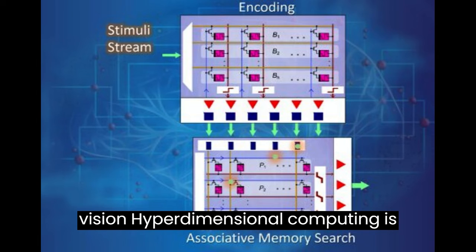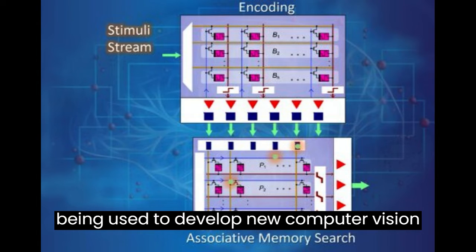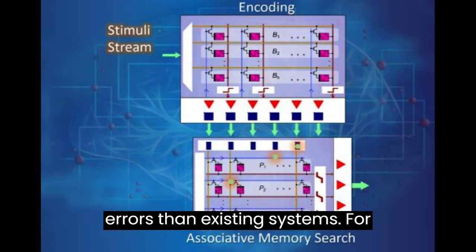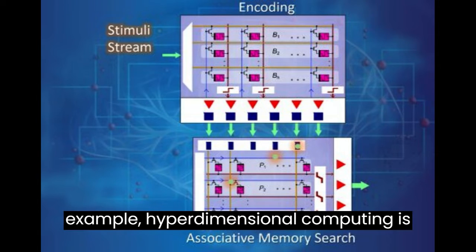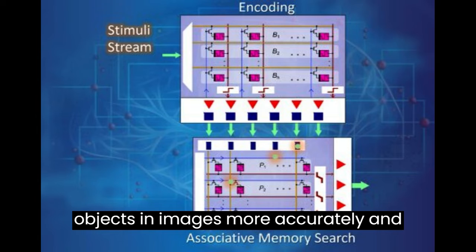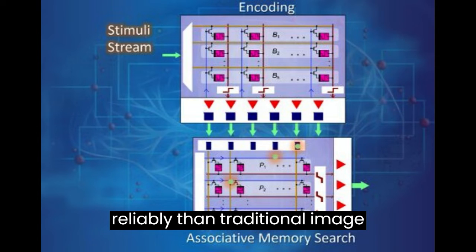In computer vision, hyperdimensional computing is being used to develop new systems that are more robust to noise and errors than existing systems. For example, it is being used to develop image classification systems that can identify objects in images more accurately and reliably than traditional image classification systems.